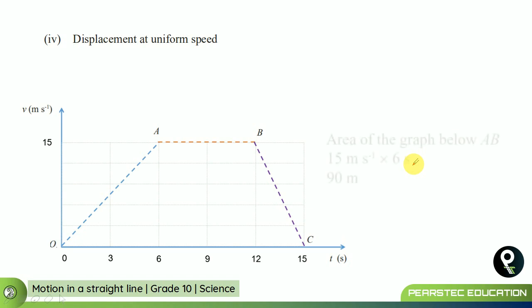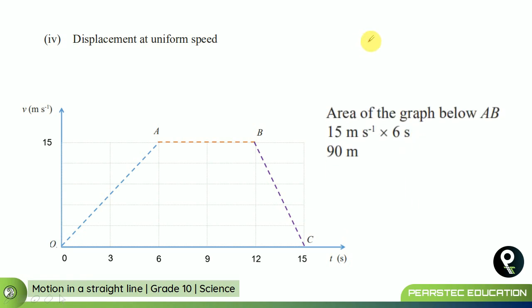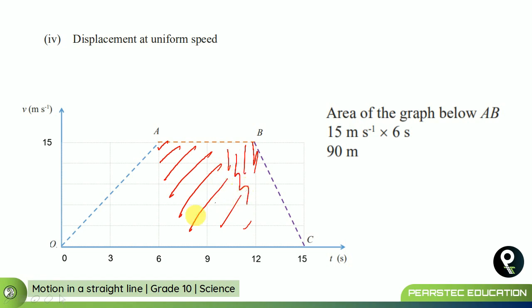For the displacement at uniform speed, we find the area below AB. This region is a rectangle — we don't divide it by two. The time from 6 to 12 seconds is 6 seconds, so the displacement is 15 multiplied by 6, which equals 90 meters.